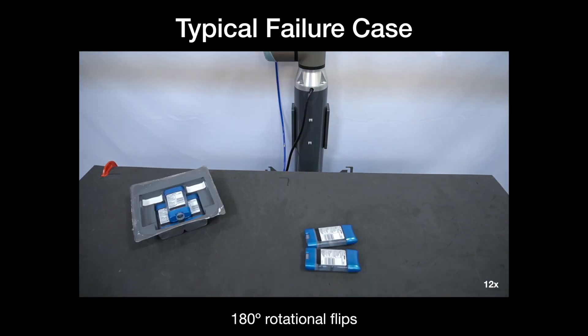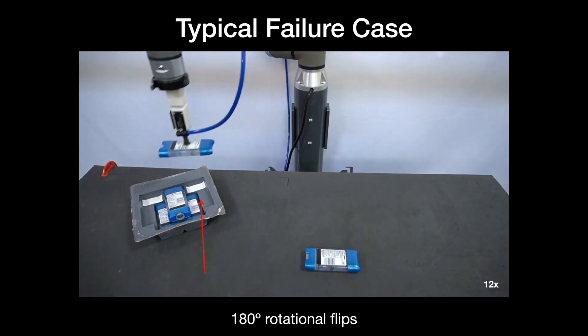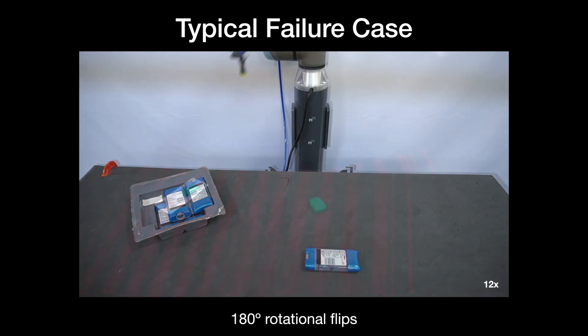Generally, we observe that frequent modes of failure come from the robot placing objects 180 degrees flipped.